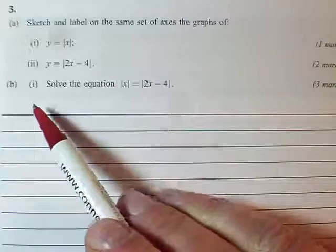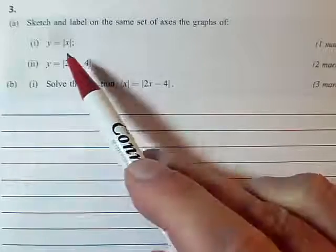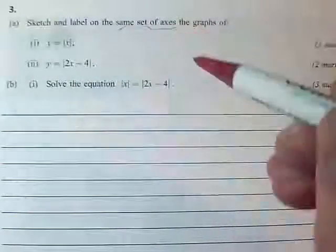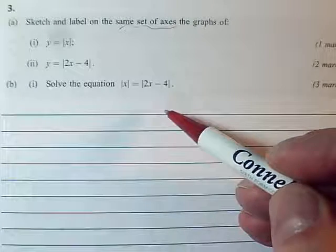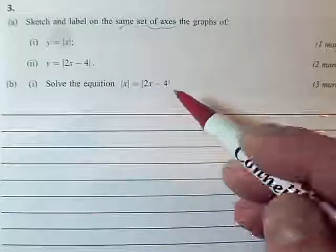And then, part B does not say hence, but because you've sketched both of these graphs and you've done it on the same set of axes, you've already visualized whereabouts on the graph the solutions are going to be. And remember,